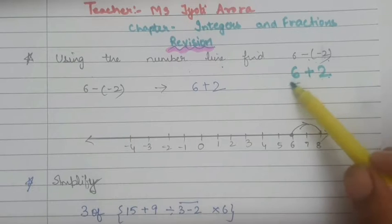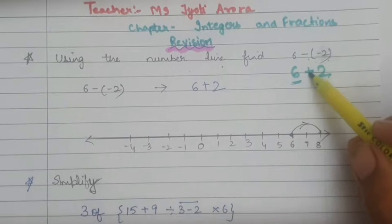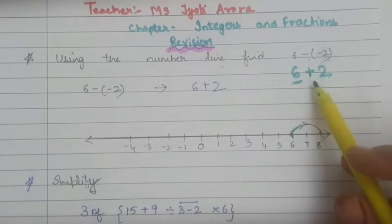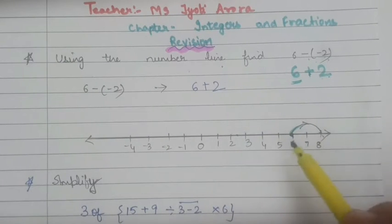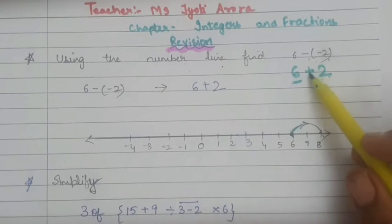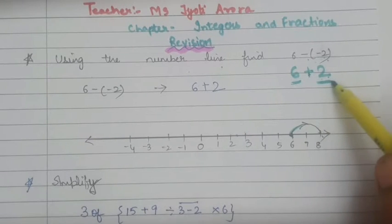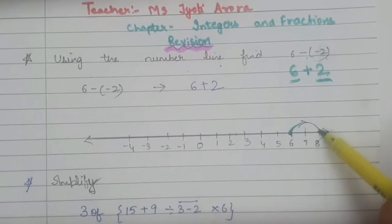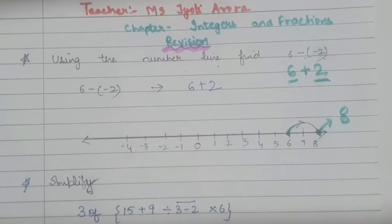Now let us start from the point 6. This is 0, 6. Plus is telling us the direction — we have to move towards right. If there will be negative, we will shift towards the negative direction, that is the left side. So, plus means we will shift towards right. How many digits will we shift? 2. 1, 2. So this is our final point, and what is it? Yes, this is 8.